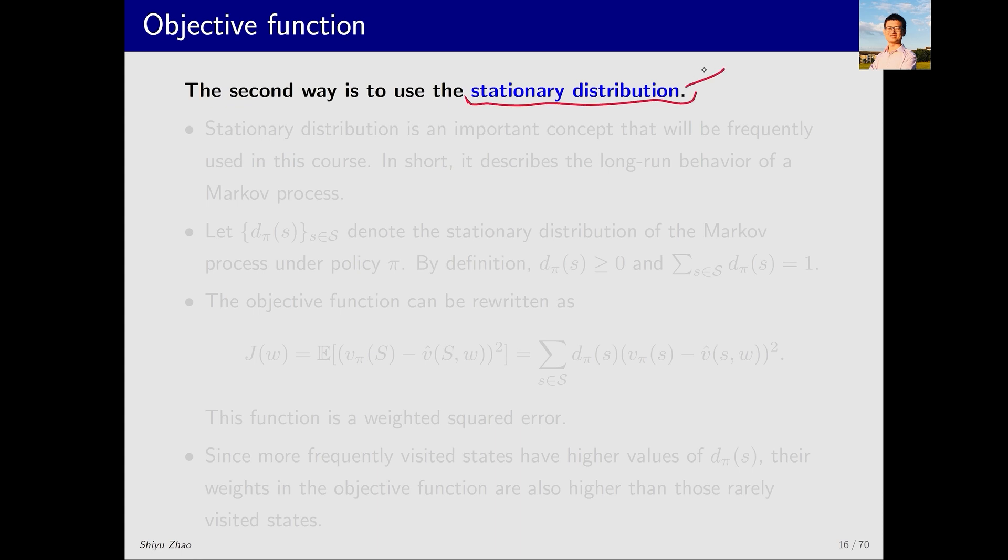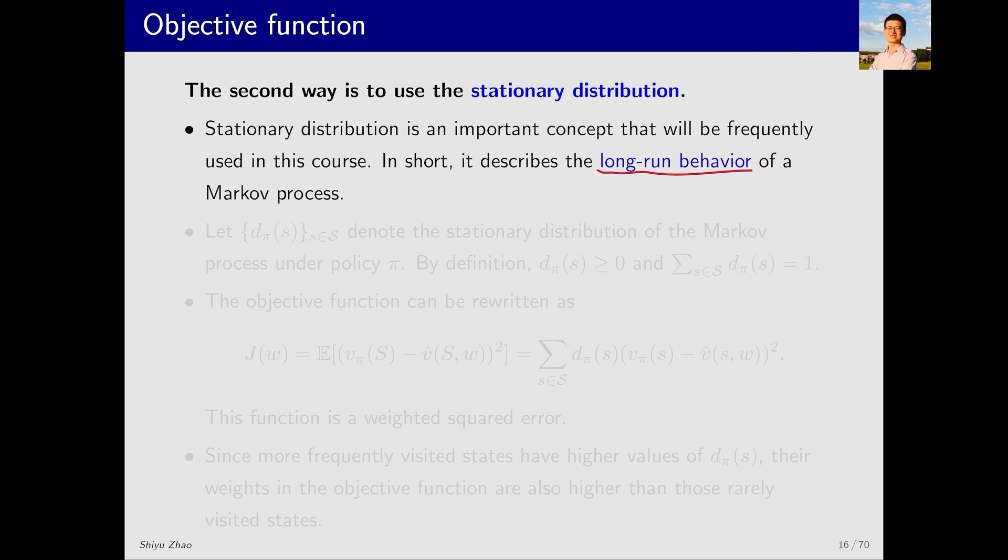The stationary distribution is a very important concept as it describes the long-run behavior of a Markov decision process. I introduce it briefly now. Later an example will make it clearer. More details can be found in my book. What does long-run behavior mean? It means that I start from a certain state and take actions according to a policy, continuously interacting with the environment while adhering to this policy. After taking actions many, many times, the agent can reach a stationary status. Then I can tell the probability of the agent appearing in any state. You'll understand this better through an example later.